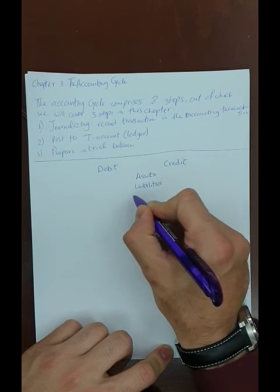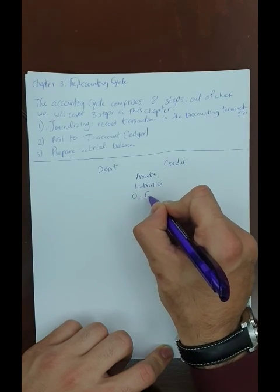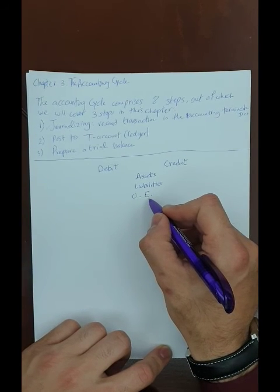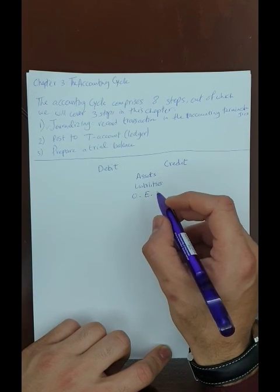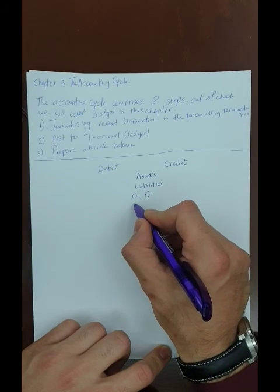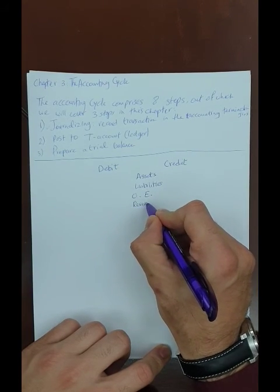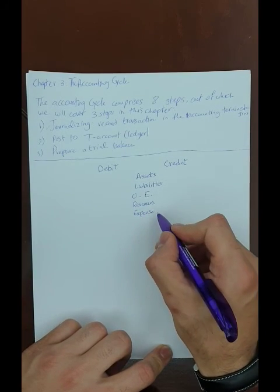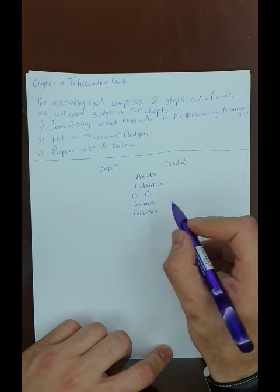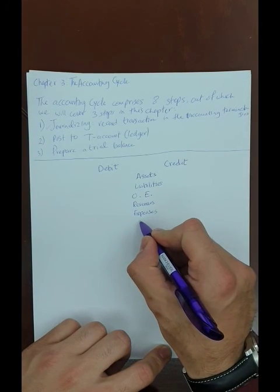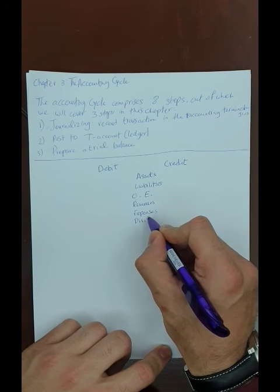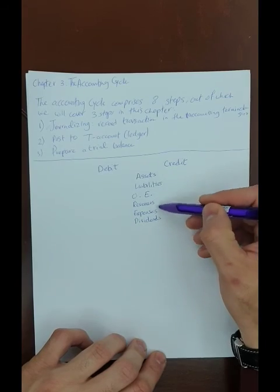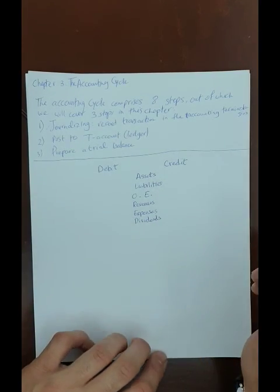Any item under liabilities or owner's equity — abbreviated as OE — behaves differently. Under owner's equity, we have retained earnings, which has two components: revenues and expenses. Net income, which is revenues minus expenses for a service-based company, goes two ways: either to retained earnings or to dividends. These six items — assets, liabilities, owner's equity, revenues, expenses, and dividends — comprise the whole accounting framework.